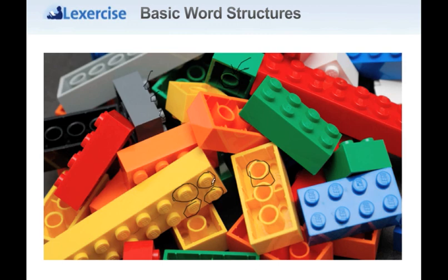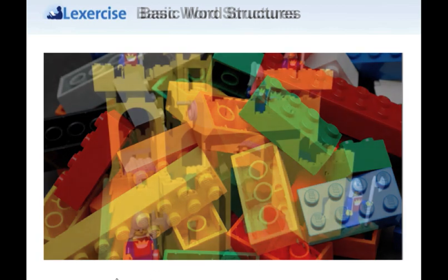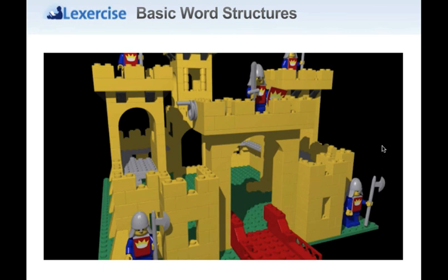So these two parts, the studs and the tubes, work together to allow you to snap the Lego bricks together. The studs fit in snugly between the tubes so that the bricks will snap one to the other. That lets you create really fantastic, complicated structures, like this castle, or fantastic spaceships, or really anything you want — just because the Lego brick has those two simple parts, the stud and the tube.